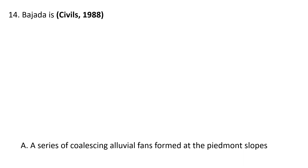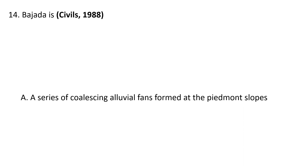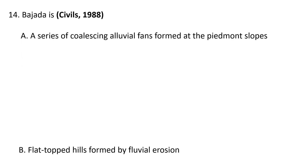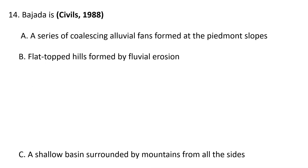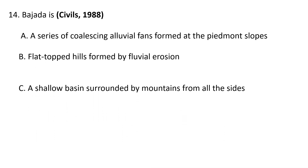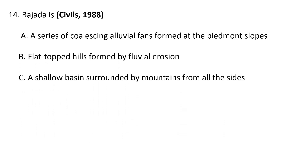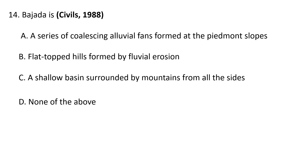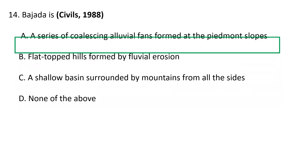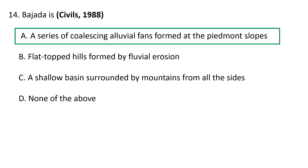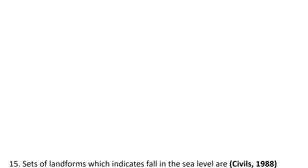Next question: Bajada is — A) a series of coalescing alluvial fans formed at the piedmont slopes, B) flat-topped hills formed by fluvial erosion, C) a shallow basin surrounded by mountains from all sides, D) none of the above. Bajada is a series of coalescing alluvial fans formed at the piedmont slopes, so A is the correct answer.